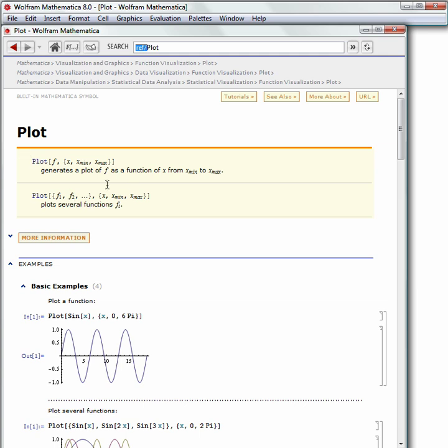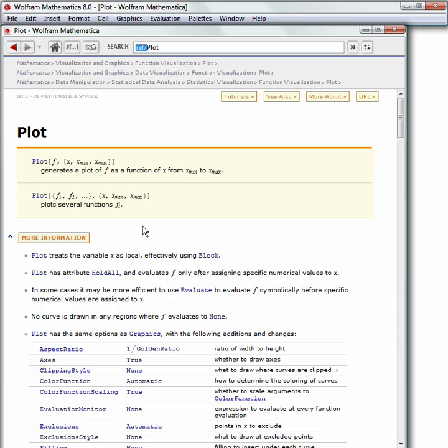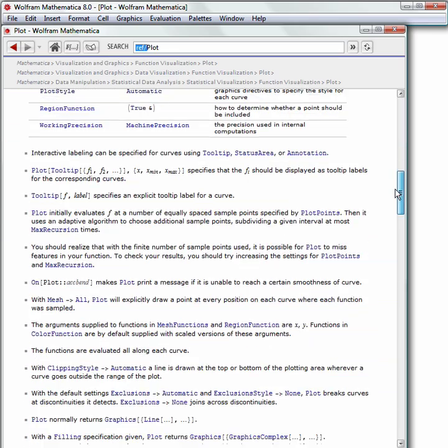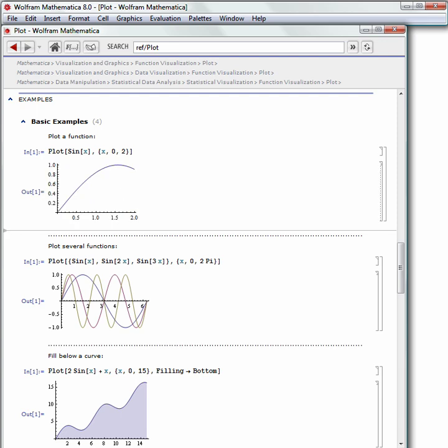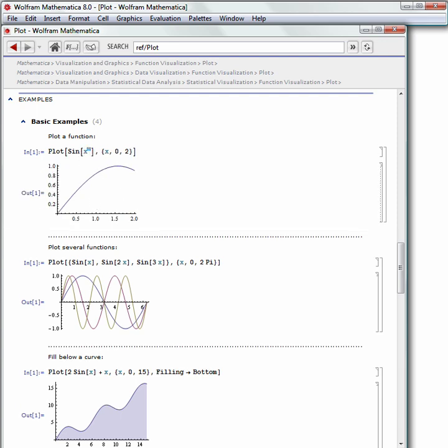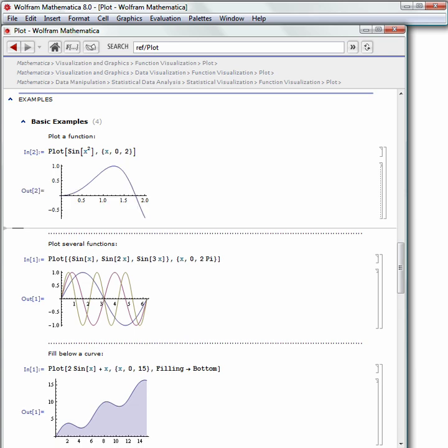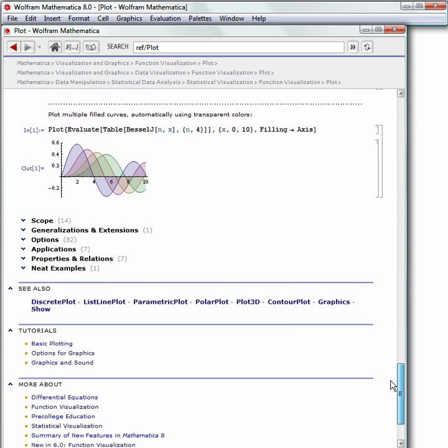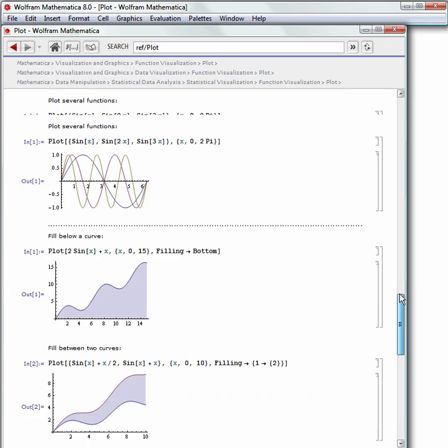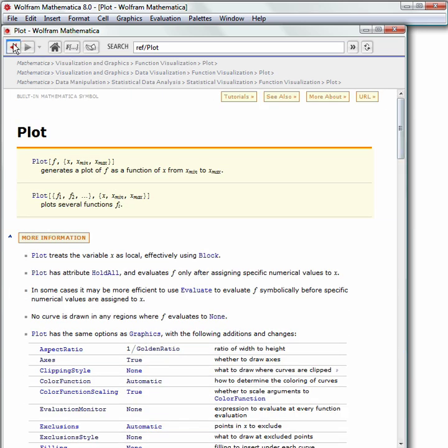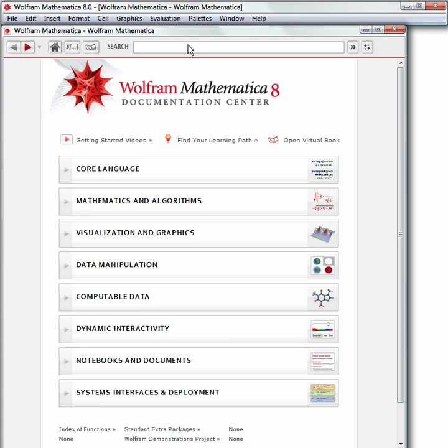You'll notice there are four sections to this documentation page. The first one tells you how to type into Mathematica. The second one is more information showing you options or attributes, things you can add on to this function. The third section is a bunch of examples. So you can really learn how to use this function for yourself. Not only are they great examples, but they're all completely interactive. You can go in and change these calculations and make your own. You don't have to retype these into a new Mathematica notebook. You can actually play and explore from the actual examples in the documentation.